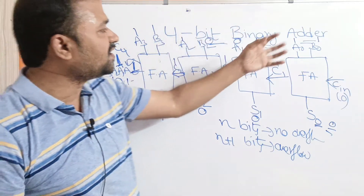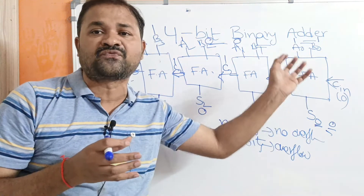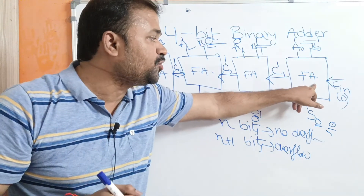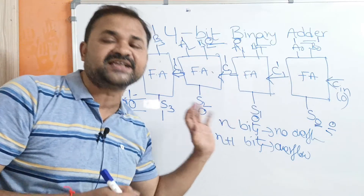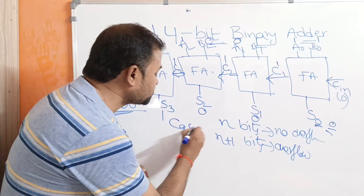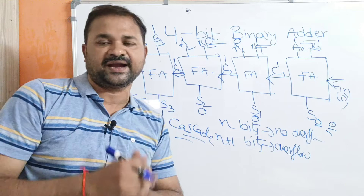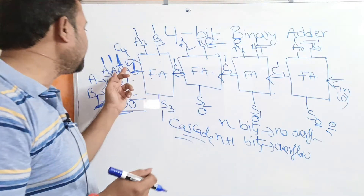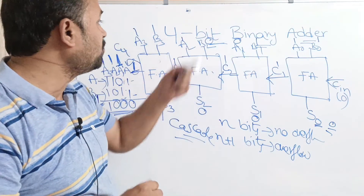The definition of a 4-bit binary adder is: it is a collection of full adders connected one by one in cascade fashion, such that the output carry of one full adder is connected as input carry to the next full adder. A 4-bit binary adder mainly produces two outputs: sum and carry.